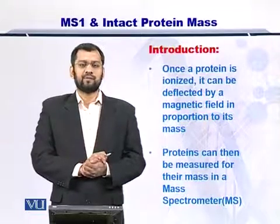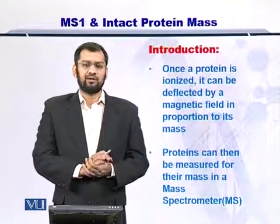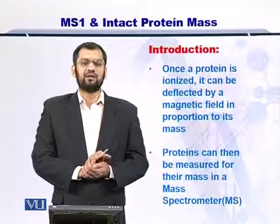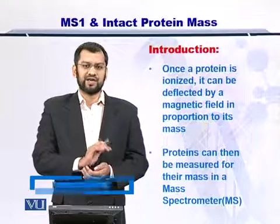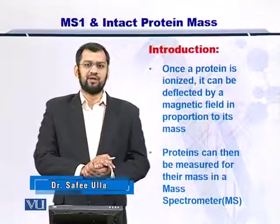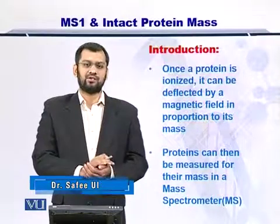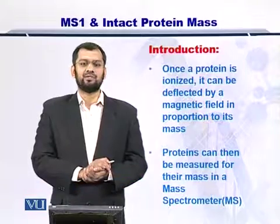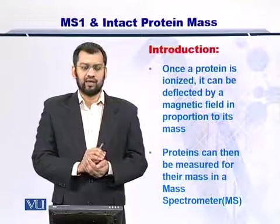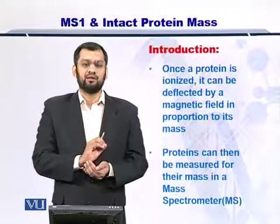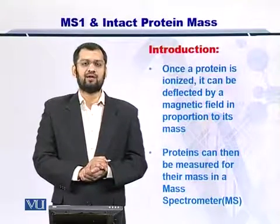Introducing the topic: once you have ionized the protein or peptide, it is ready for injection into the mass spectrometer chamber. Once ionized and injected into the mass spectrometer chamber, it will take a motion according to the charge and the mass. We call it the mass over charge ratio. This mass over charge ratio can be measured by looking at the speed and the direction of motion of this intact molecule.